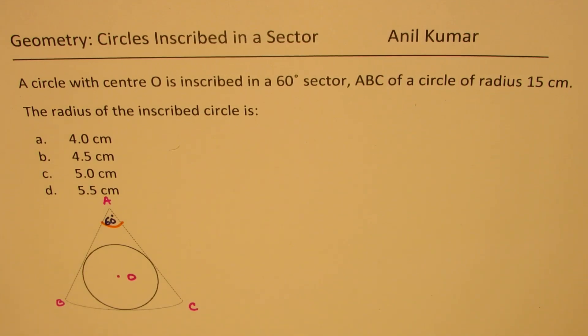I am Anil Kumar sharing with you a very interesting multiple choice test question. A circle with center O is inscribed in a 60 degree sector ABC of a circle of radius 15 cm.